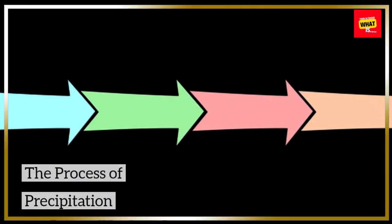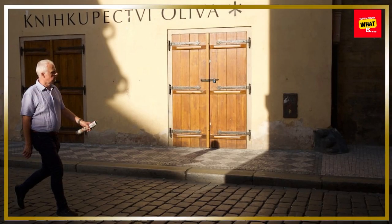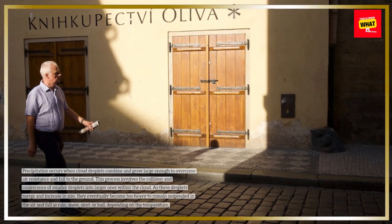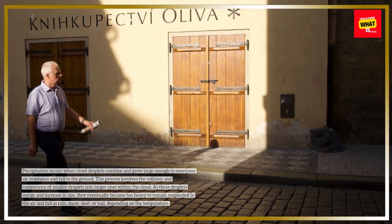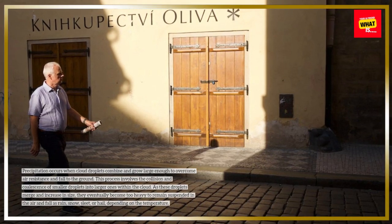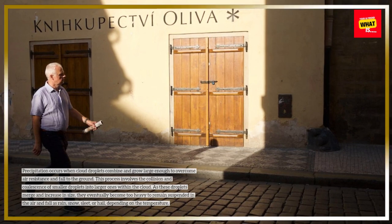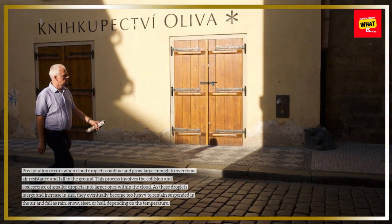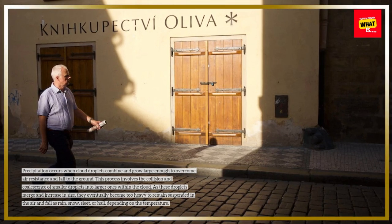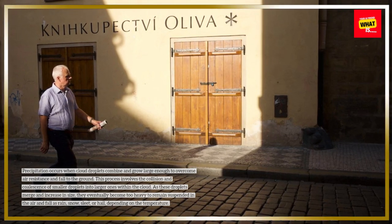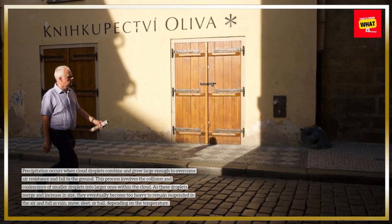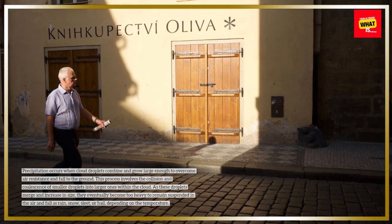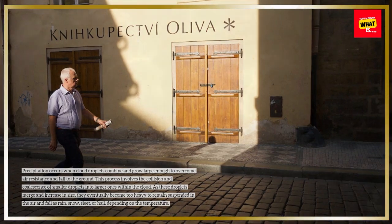The Process of Precipitation. Precipitation occurs when cloud droplets combine and grow large enough to overcome air resistance and fall to the ground. This process involves the collision and coalescence of smaller droplets into larger ones within the cloud. As these droplets merge and increase in size, they eventually become too heavy to remain suspended in the air and fall as rain, snow, sleet, or hail, depending on the temperature.